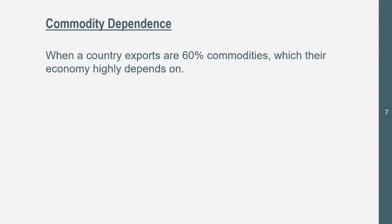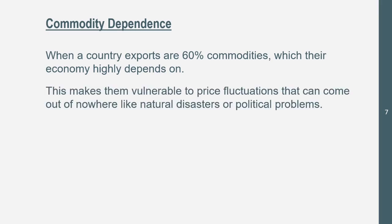Now let's get into commodity dependence. It's defined as when a country's exports are 60% commodities, on which their economy highly depends. If they're exporting primarily raw commodities like crops, their economy will heavily depend on it. This makes them vulnerable to price fluctuations from natural disasters, political problems, or a trading partner suddenly finding a cheaper source. If they're not exporting commodities, they're not making money. We see commodity dependence primarily in periphery and sometimes semi-periphery countries — even Brazil, which is semi-periphery, has some commodity dependency.